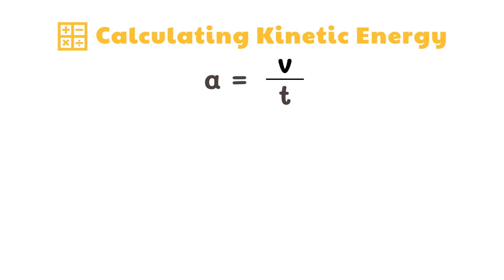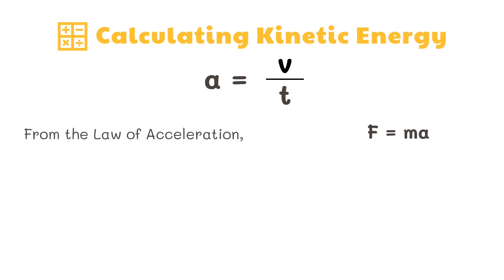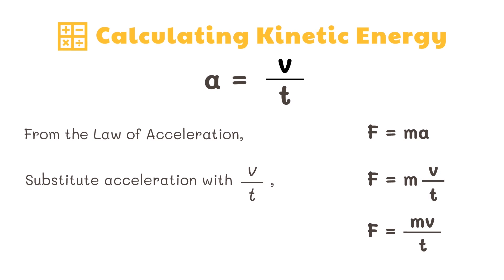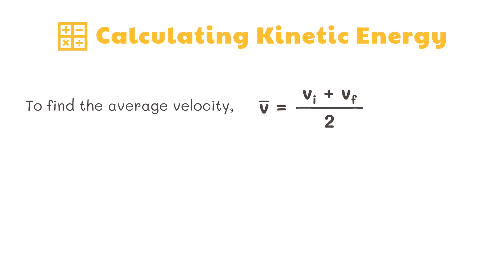Now let's get the formula for force. Remember the formula in the law of acceleration, where force is equal to mass times acceleration? Let's substitute acceleration into that formula. We have force is equal to mass times velocity divided by time. The equation for finding the average velocity of the ball is: average velocity equals initial velocity plus final velocity divided by 2.